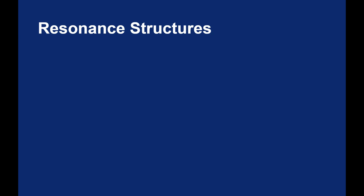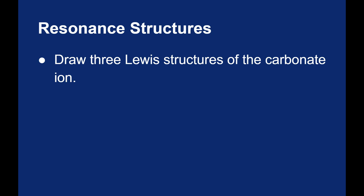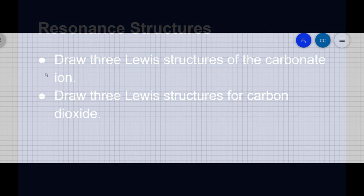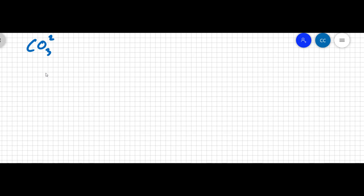I'm going to practice drawing some Lewis structures by looking at various resonance structures. First of the carbonate ion, and then of carbon dioxide. So I'm going to do three Lewis structures for the carbonate ion, then three Lewis structures for carbon dioxide. Let's begin with the carbonate ion, CO3 2-.